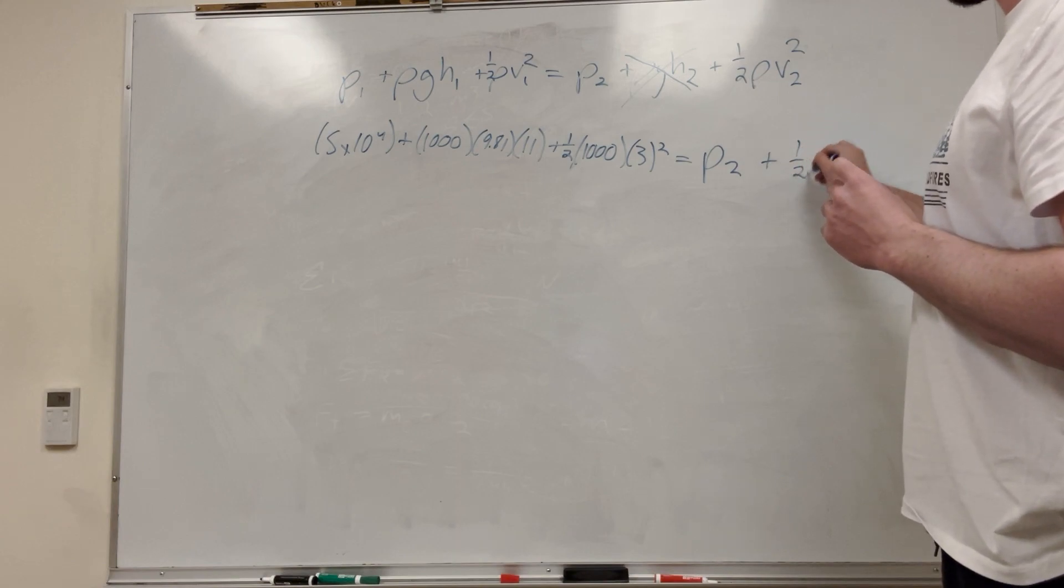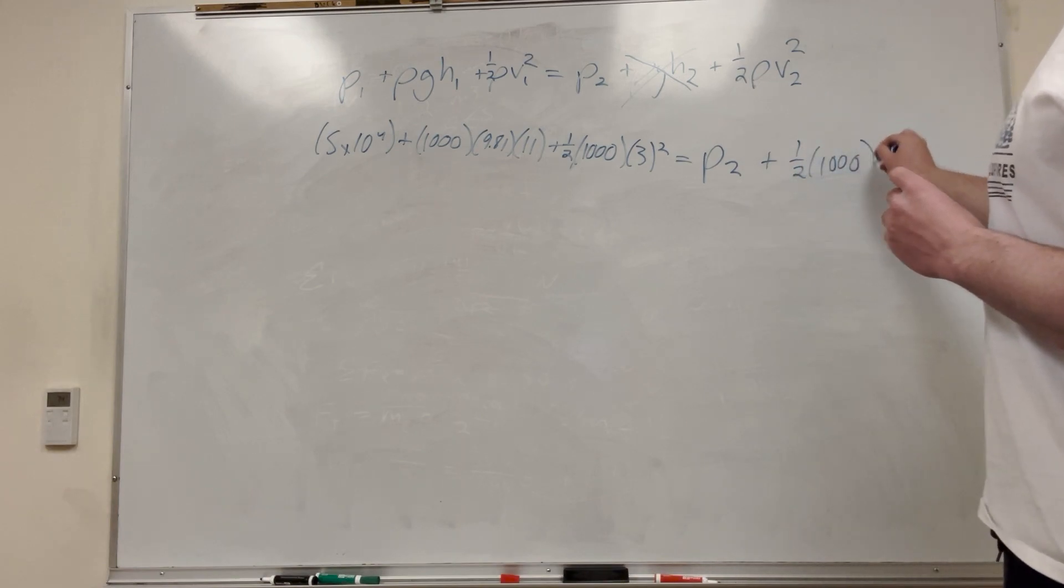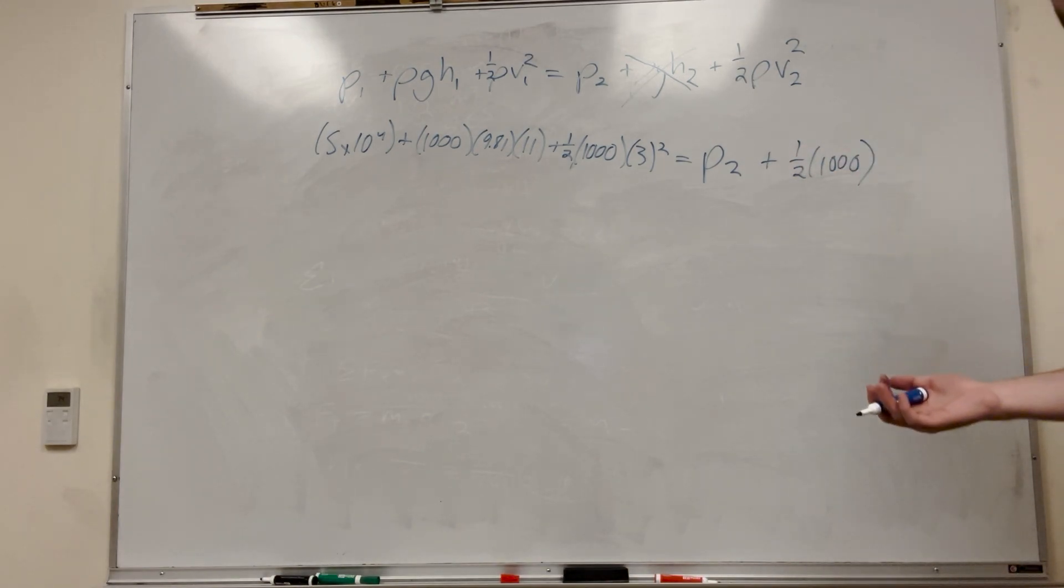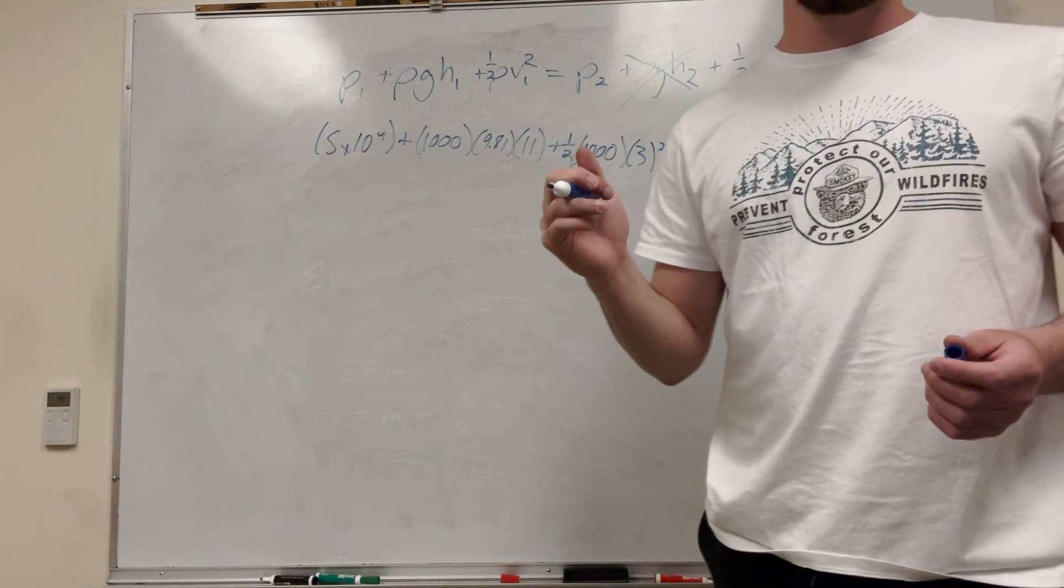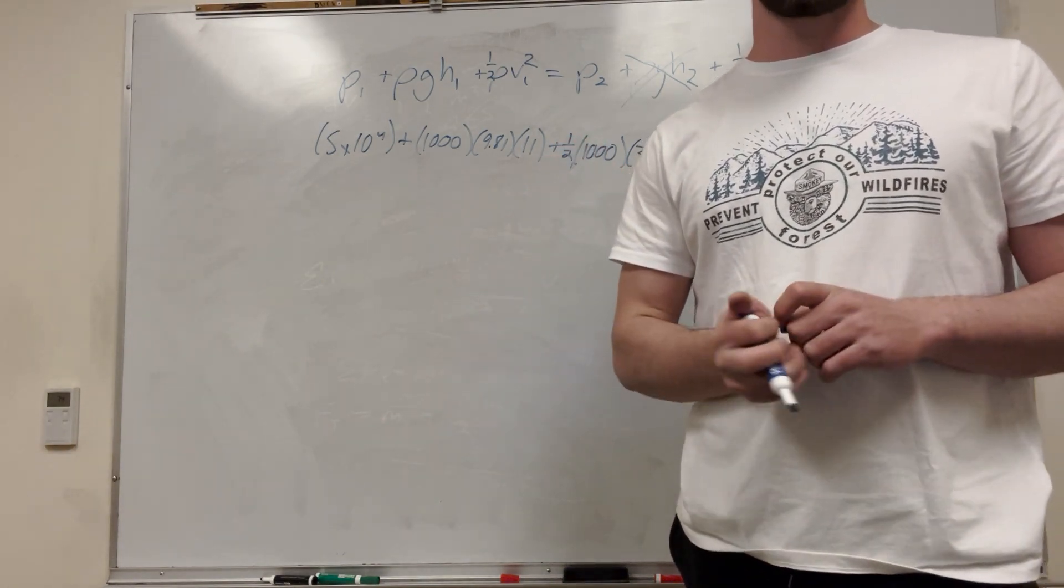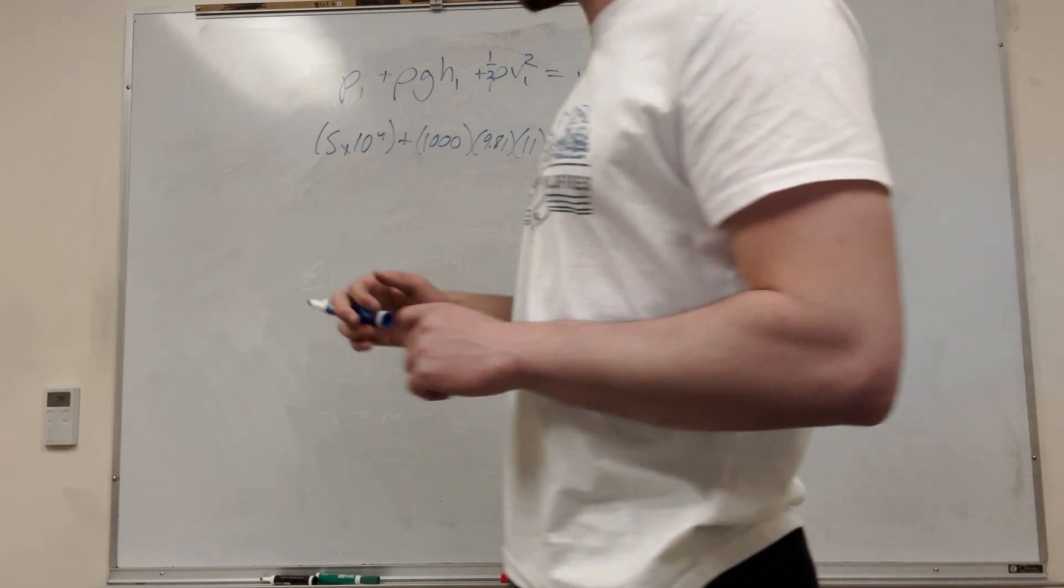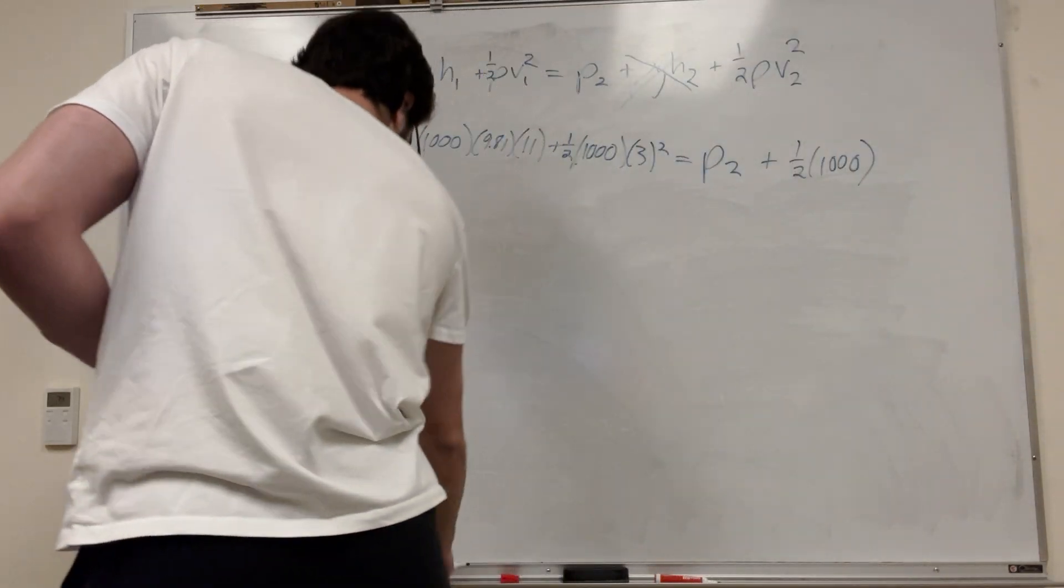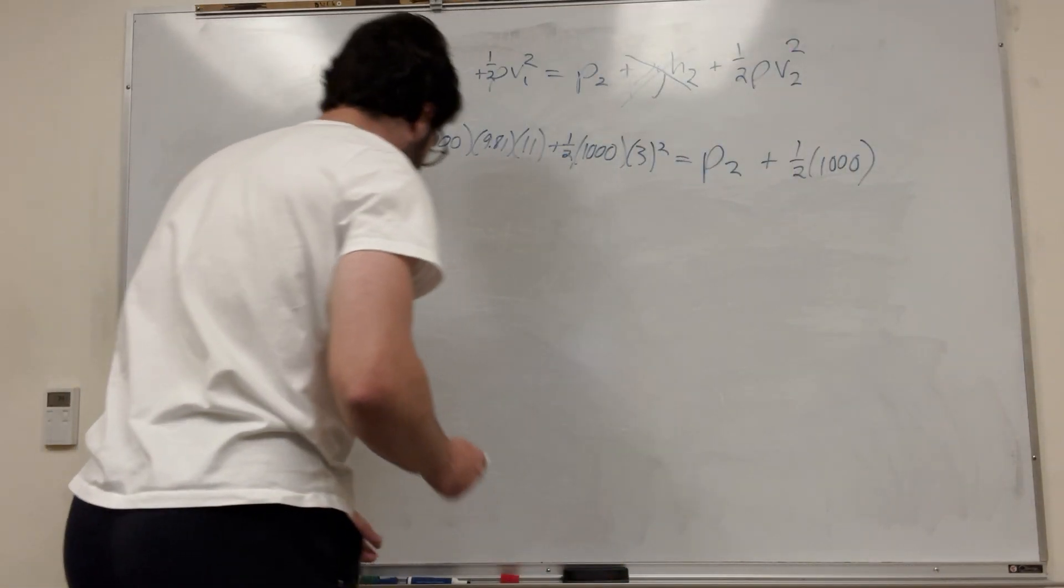And this is plus one half density of water, 1,000. But then velocity of 2, right? We don't know velocity of 2. That's something we need. So how are we going to find the velocity of 2? We're going to need another equation for that. And that equation is going to be this equation.